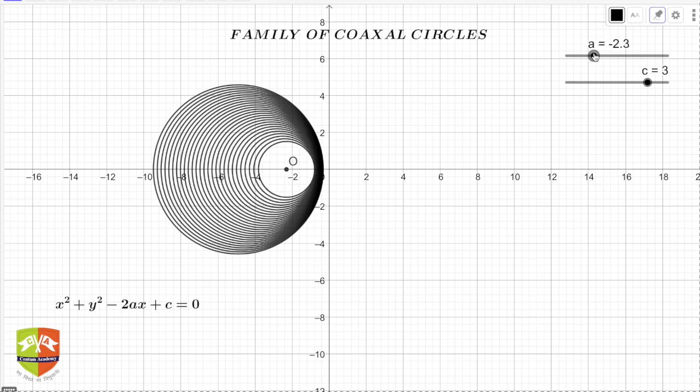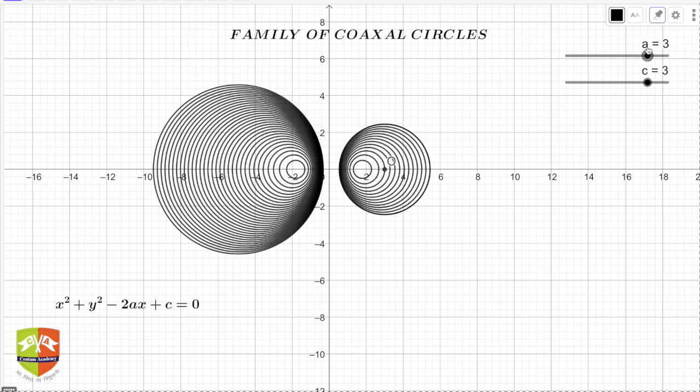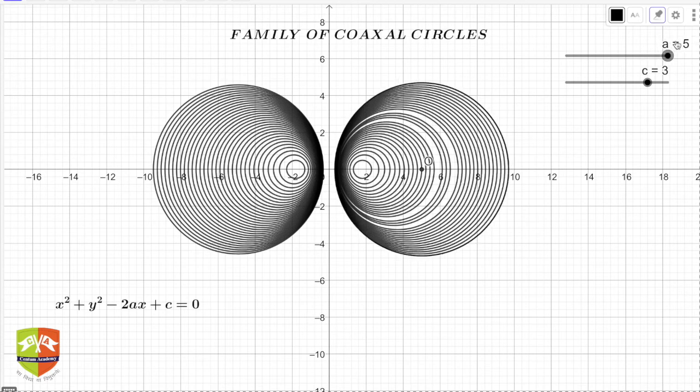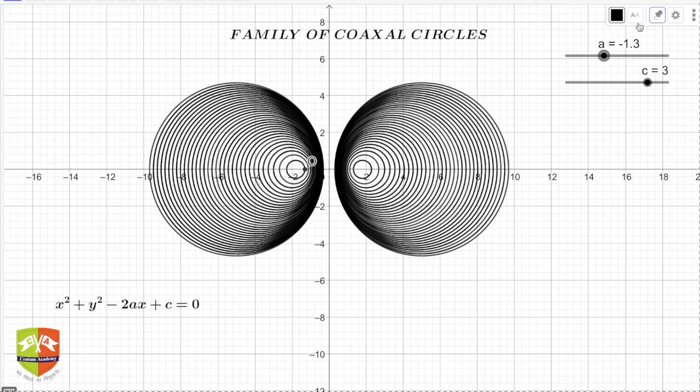You can see there is some value of a where there is no circle. When c is positive, the radius is coming out to be imaginary, so there is no circle. The moment it crosses one particular point, then again circles are appearing. This is another set of coaxial circles.